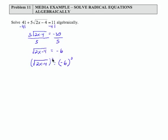So the square root inside and the square on the outside just gives us 2x minus 4. Negative 6 times negative 6 is a positive 36.